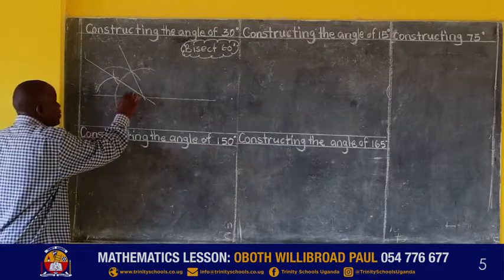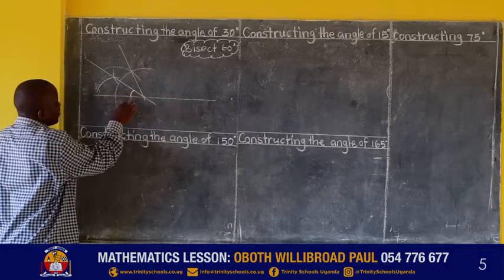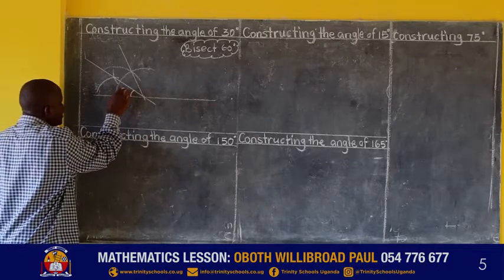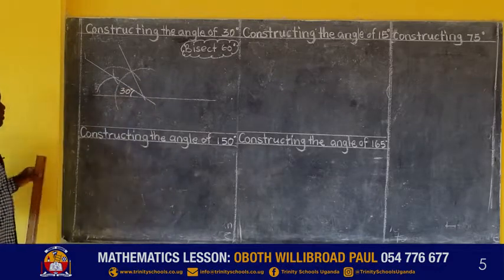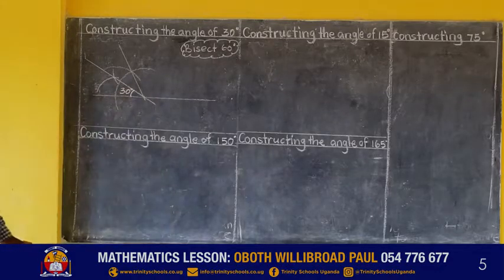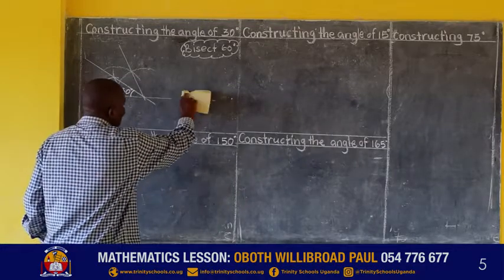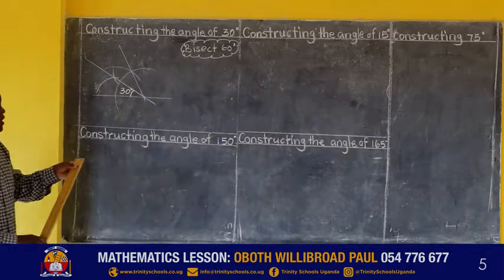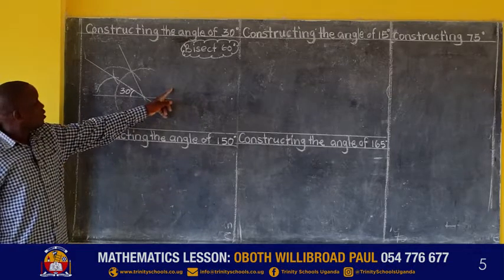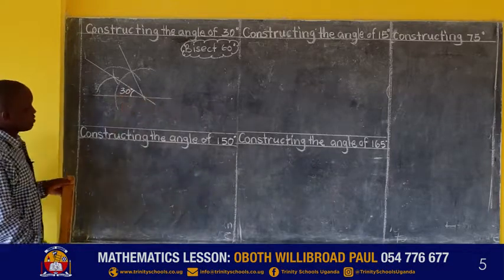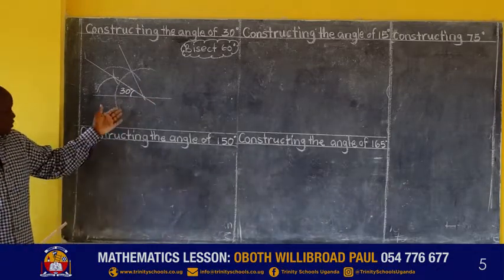Now that angle — indicate the one below — is the angle of 30 degrees. We can also construct an angle of 15 degrees. We shall look at that one on the other side. So let us proceed.